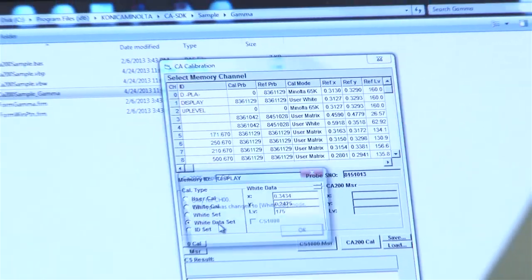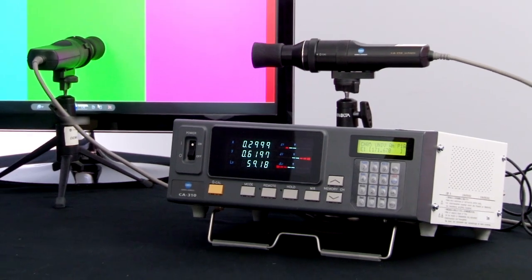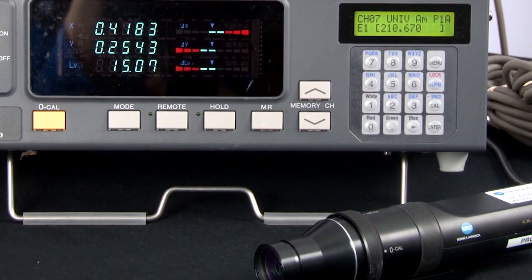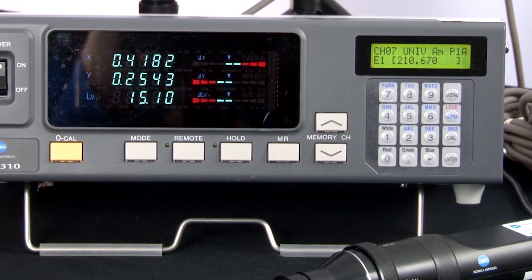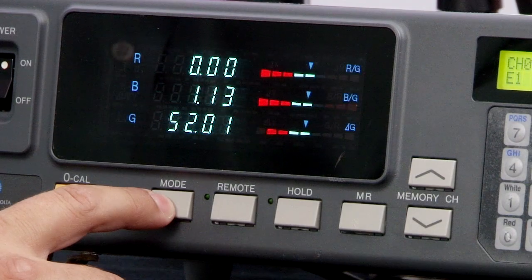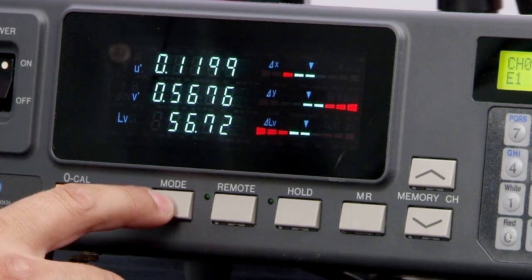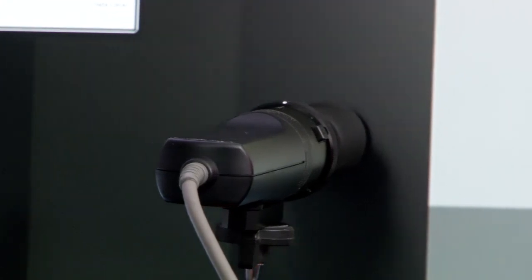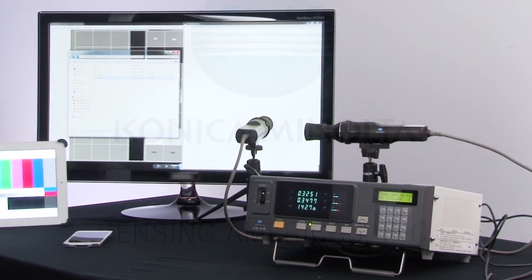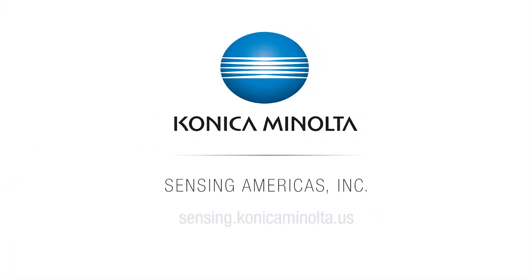Konica Minolta Sensing CA310 Display Color Analyzer is an extremely accurate, high-speed instrument designed to measure the luminance and chromaticity of high performance displays. For more information on Konica Minolta Sensing's light and display measurement instruments, visit us at sensing.konicaminolta.us or call 888-473-2656.